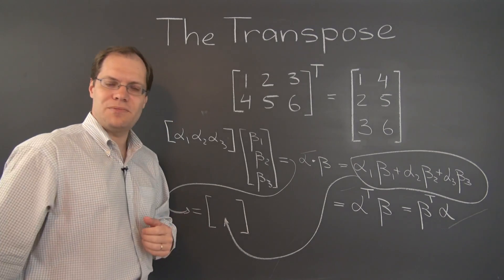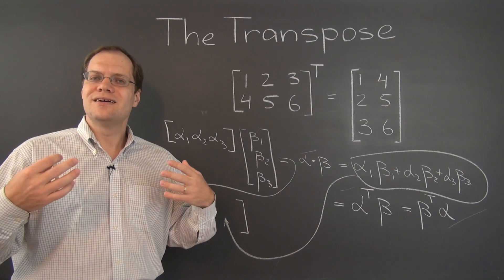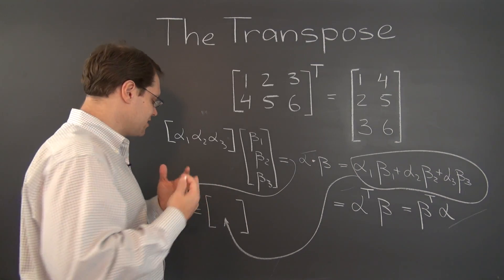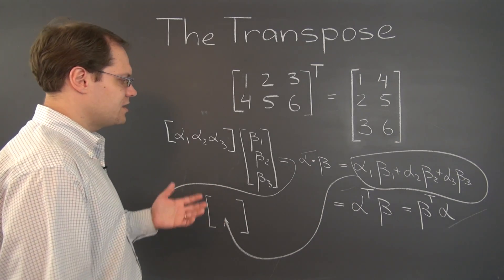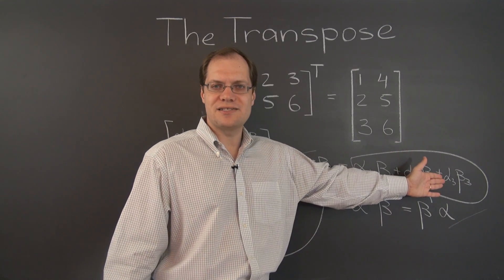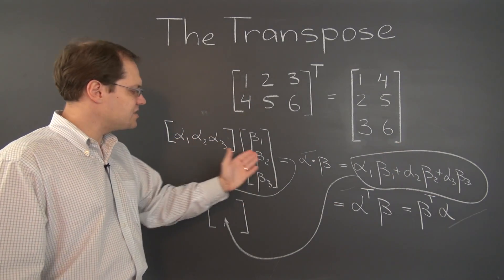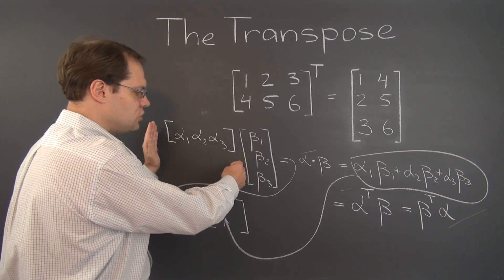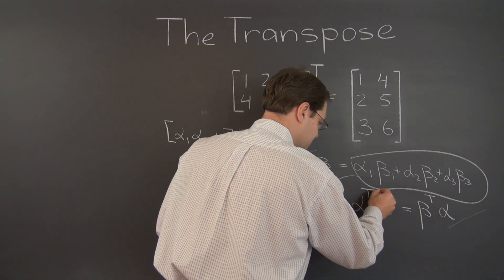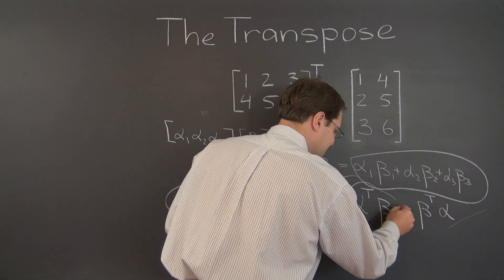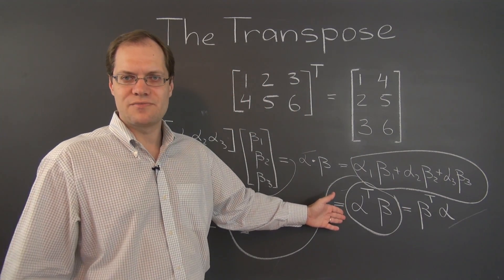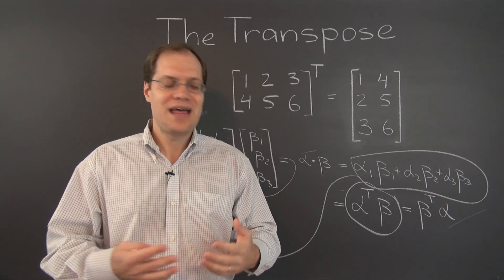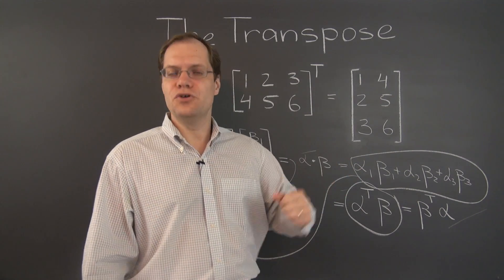So the result is a 1 by 1 matrix. And, of course, you can mentally identify 1 by 1 matrices with simple numbers. So there you go. This very useful concept is very naturally captured by matrix expression when using the transpose. And this is the key to the importance of the operation of the transpose. So that's the definition and a glimpse into its future importance.